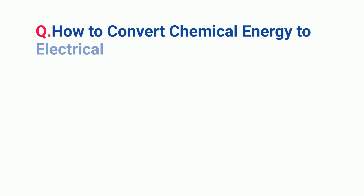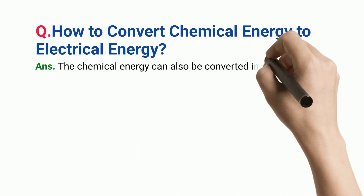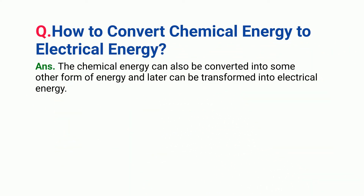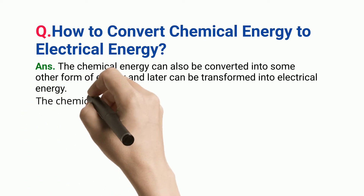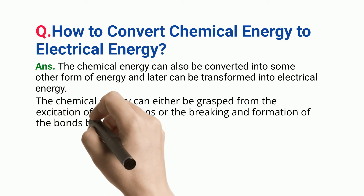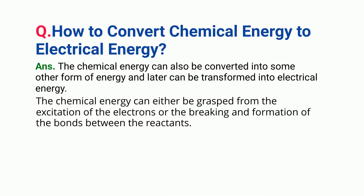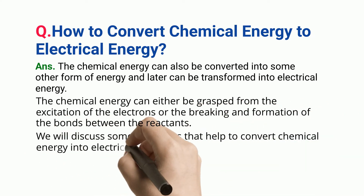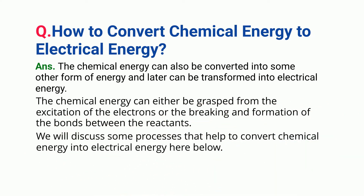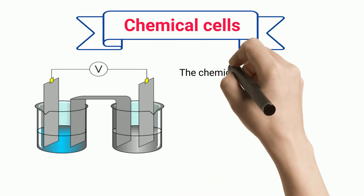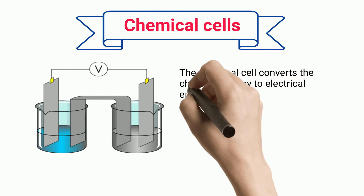How to convert chemical energy to electrical energy? The chemical energy can also be converted into some other form of energy and later transformed into electrical energy. The chemical energy can either be grasped from the excitation of the electrons or the breaking and formation of bonds between the reactants. We will discuss some processes that help to convert chemical energy into electrical energy. Chemical cells convert the chemical energy to electrical energy.